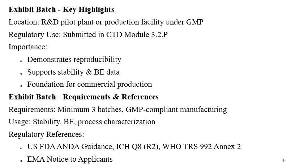These batches are also called pilot batches by some professionals. Exhibit batch requirements: a minimum of 3 batches in a GMP-compliant manufacturing area. These are used for stability, bioequivalence, process characterization, and to demonstrate the robustness of the product. It is demonstrated through these 3 batches that the manufacturer can manufacture a quality product consistently. Regulatory references include US FDA guidance, ICH Q8 R2 guidelines, WHO guidelines, and EMA notices.